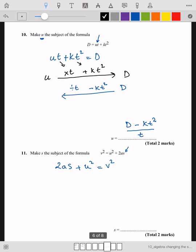Function machine starting with s, v square. So times by 2a and plus u square.